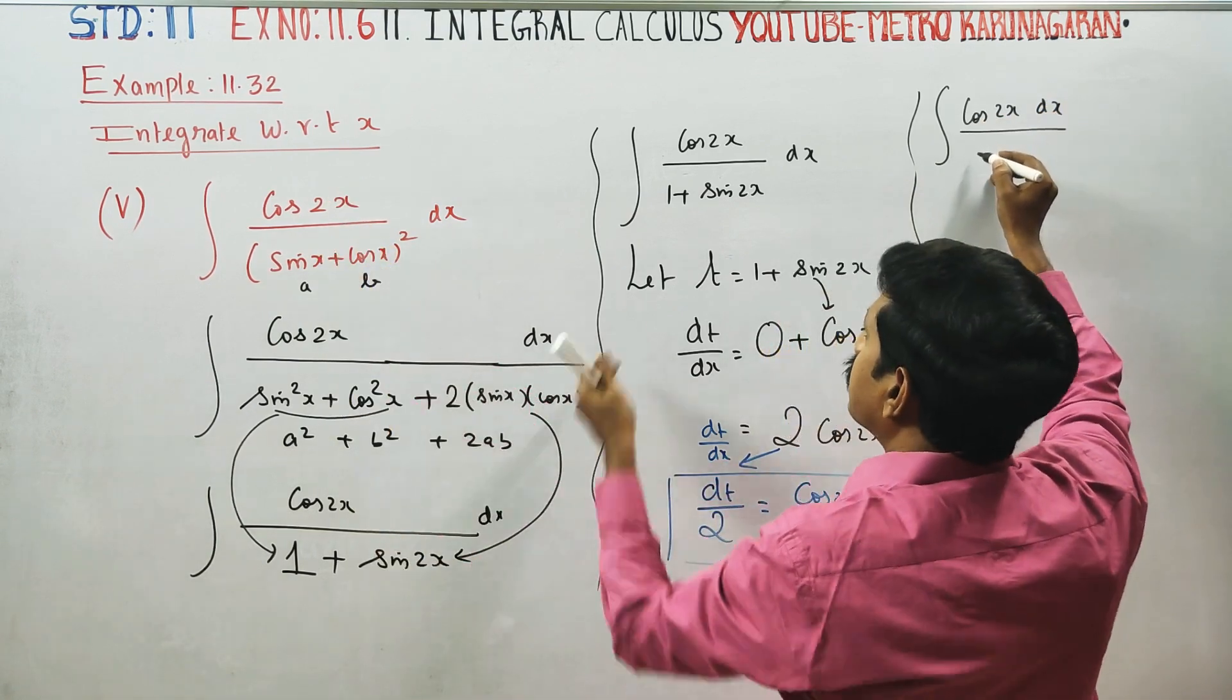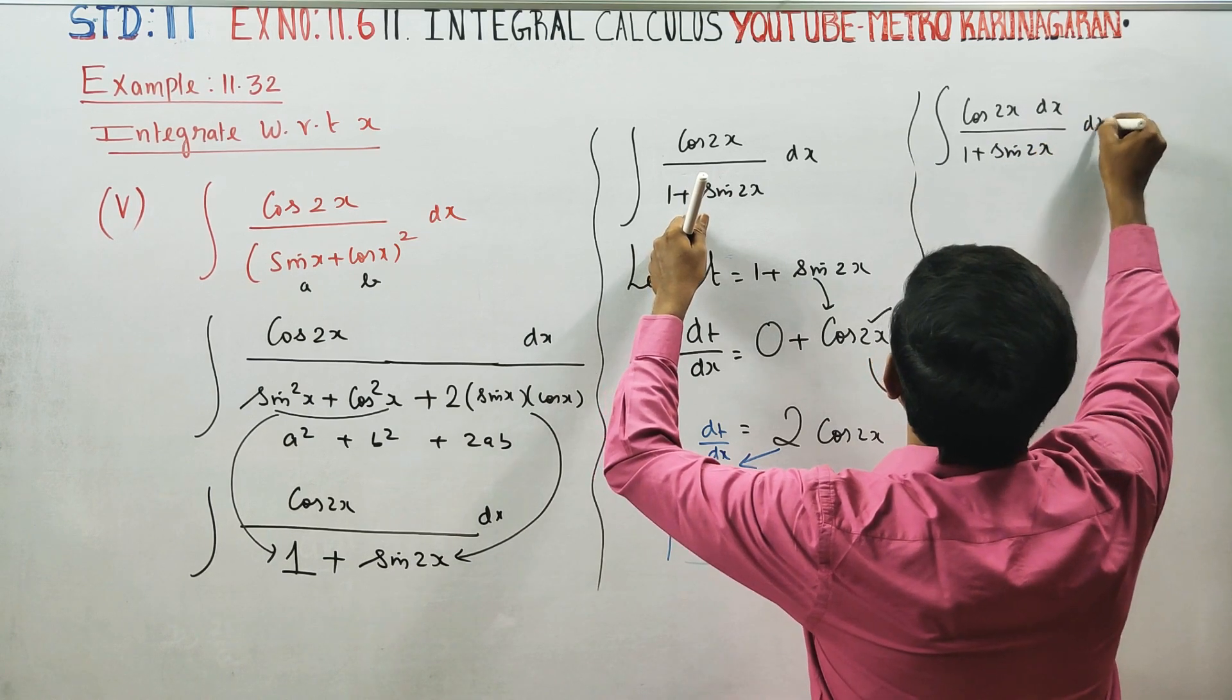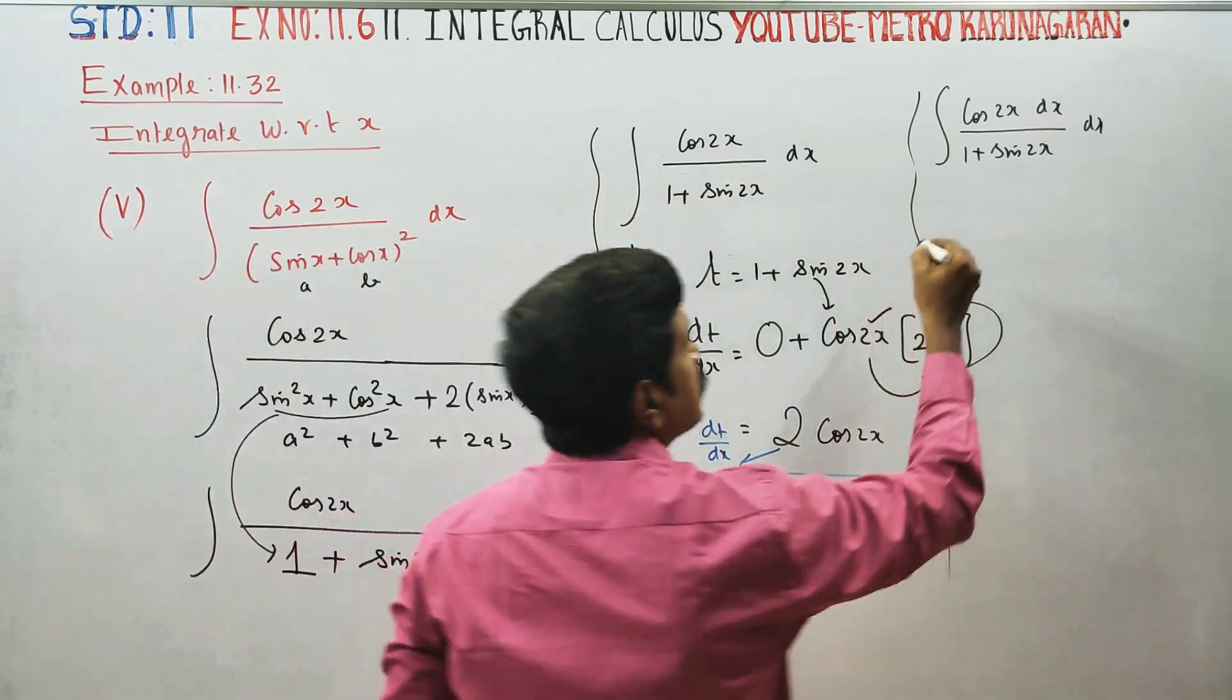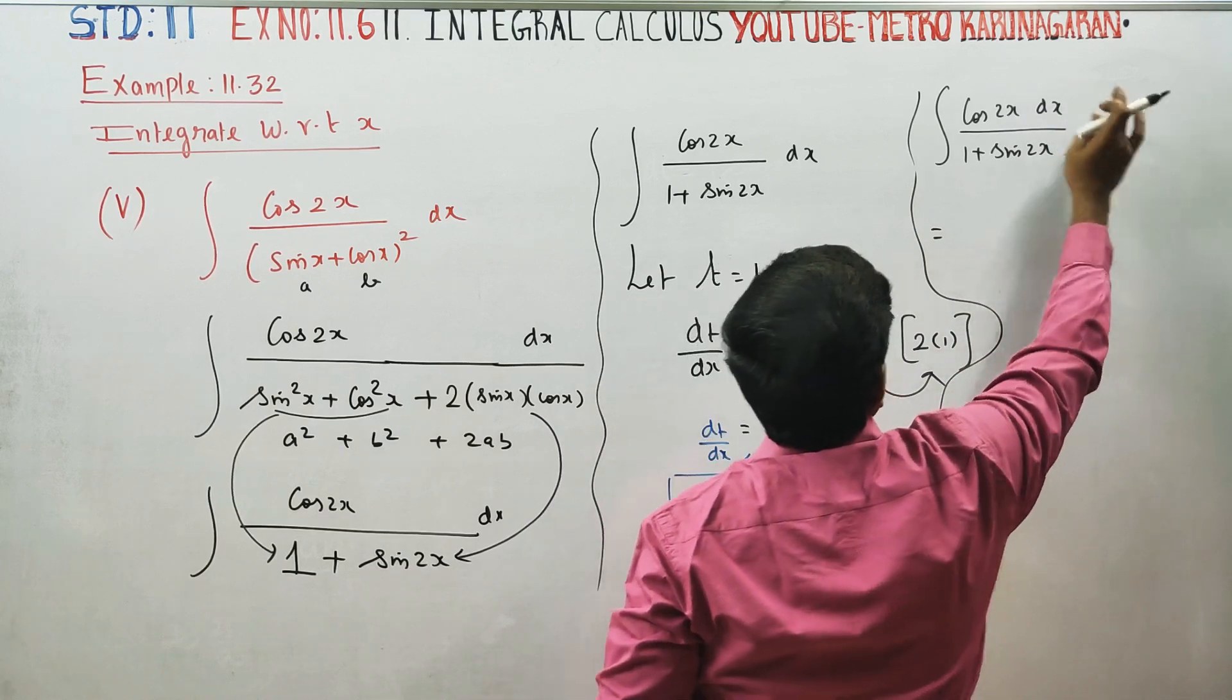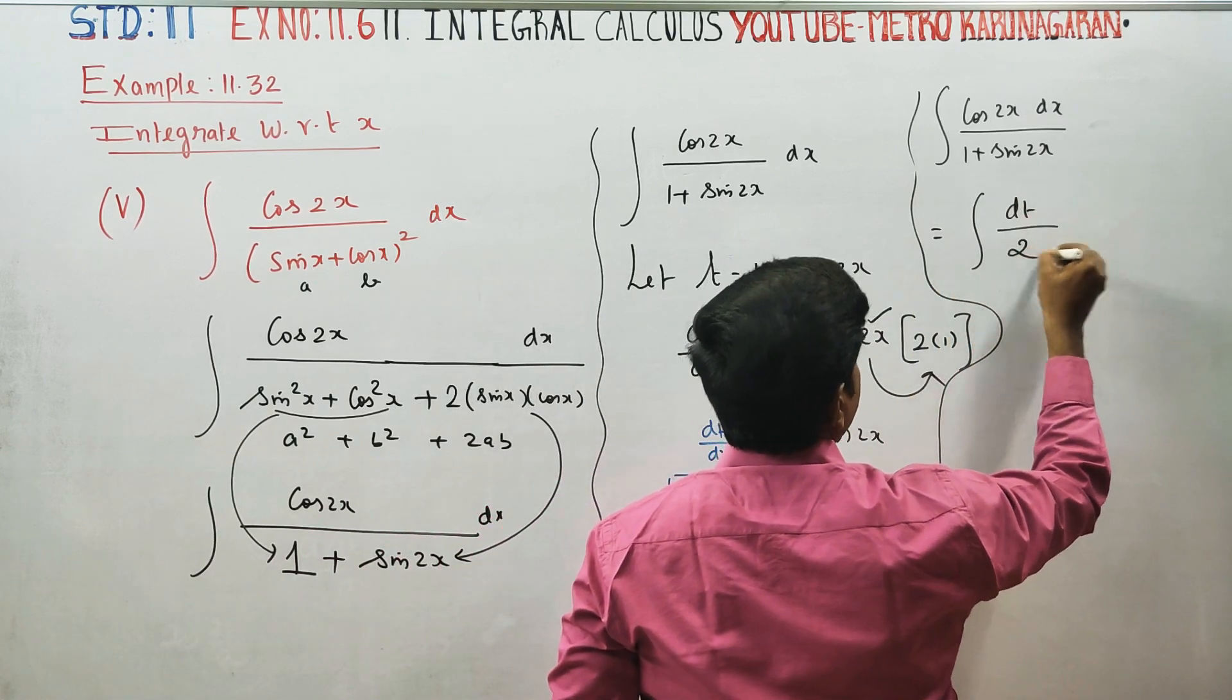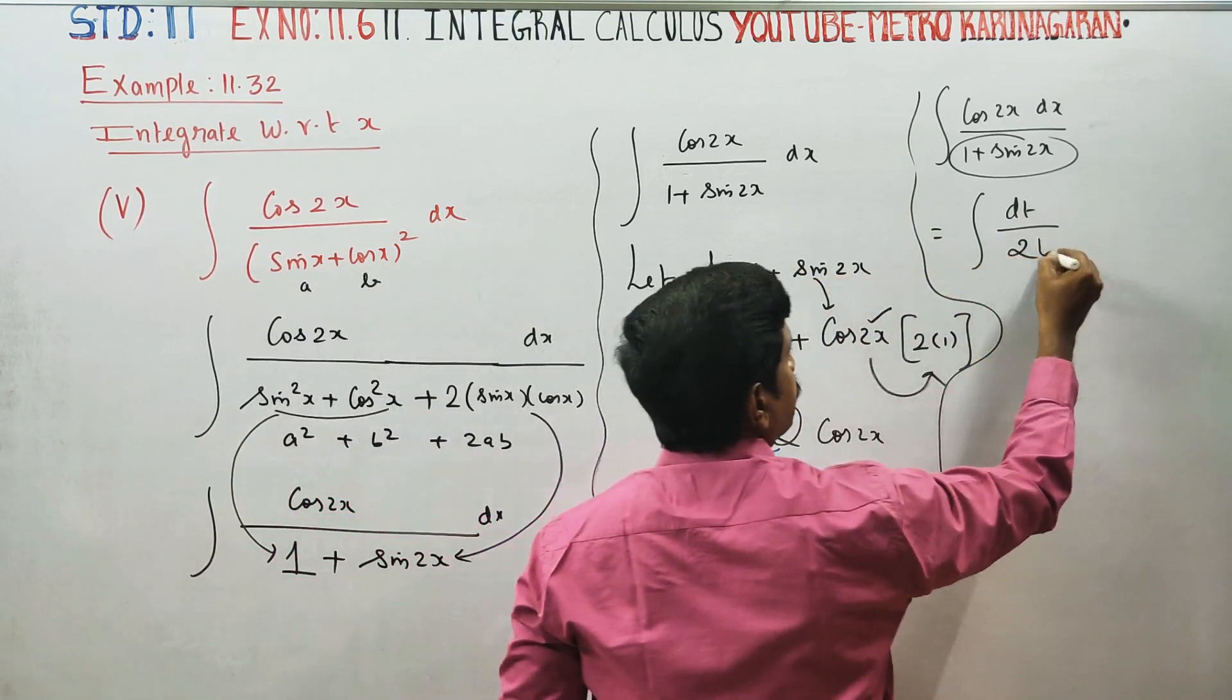The integral simplifies to cos(2x)/(1 + sin(2x)) dx. Since cos(2x) dx = dt/2, we have the integration of (1/2) times (1/t) dt.